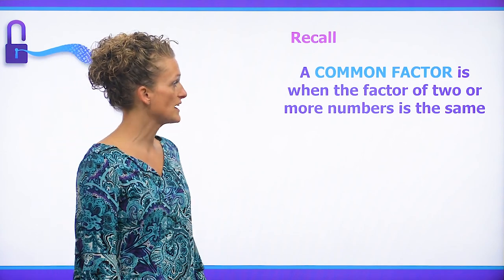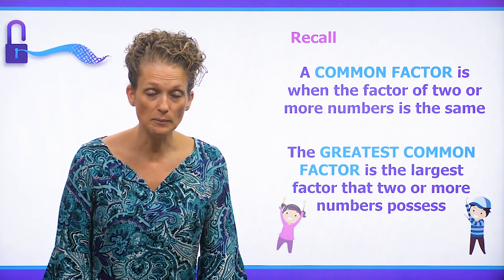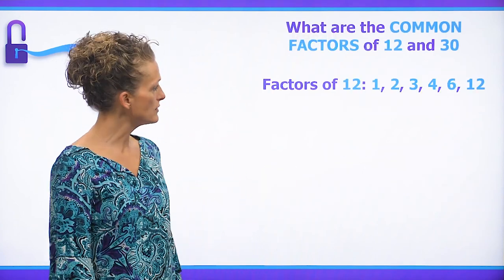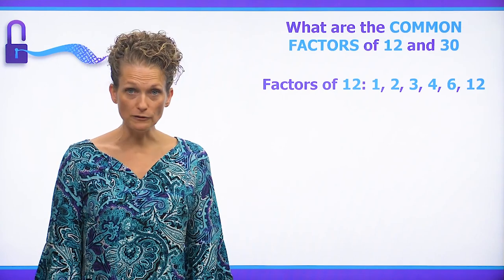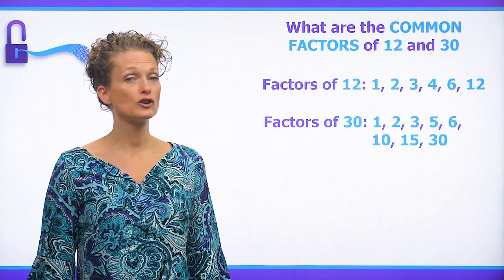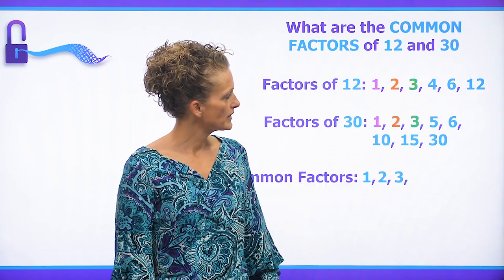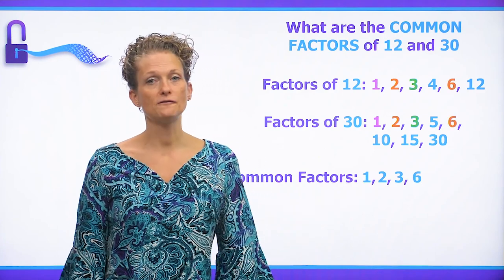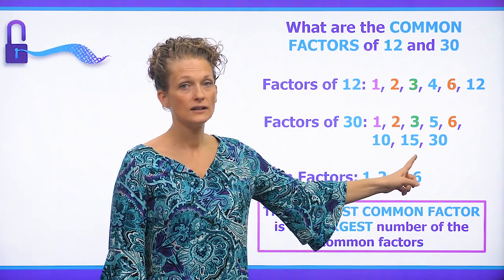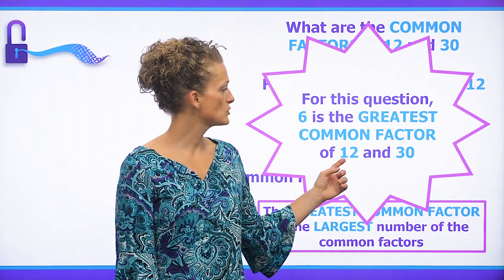A common factor is when the factors of two or more numbers are the same. The greatest common factor is the biggest number of the common factors. Let's find the common factors of 12 and 30. The factors of 12 are 1, 2, 3, 4, 6, and 12. The factors of 30 are 1, 2, 3, 5, 6, 10, 15, and 30. The common factors are 1, 2, 3, and 6. So 6 is the greatest common factor between 12 and 30.